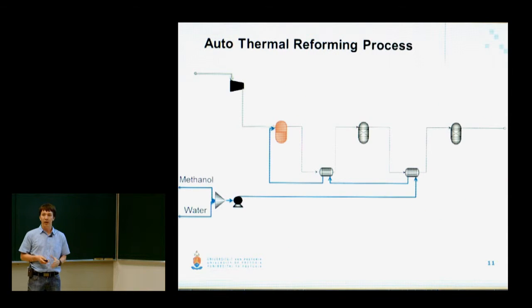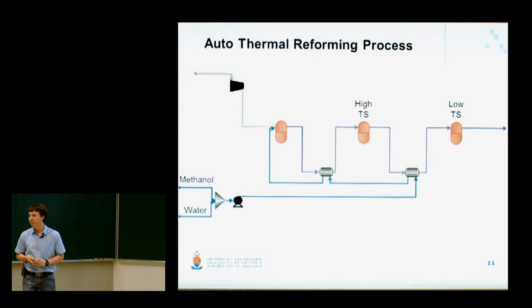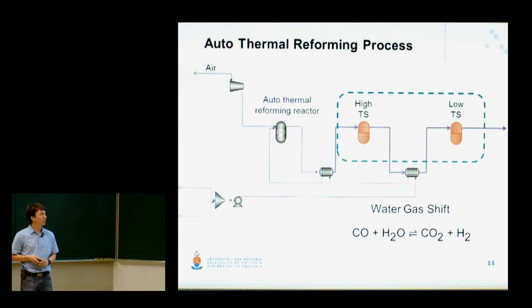Now the gases from this reactor go through two additional reactors known as the high temperature shift reactor and the low temperature shift reactor. In these reactors, the water gas shift reaction takes place where carbon monoxide is reacted with water to form additional hydrogen and carbon dioxide. The main purpose for these reactors is to reduce the carbon monoxide concentrations. Carbon monoxide poisons the catalyst that is used in the fuel cell, leaving it less effective.